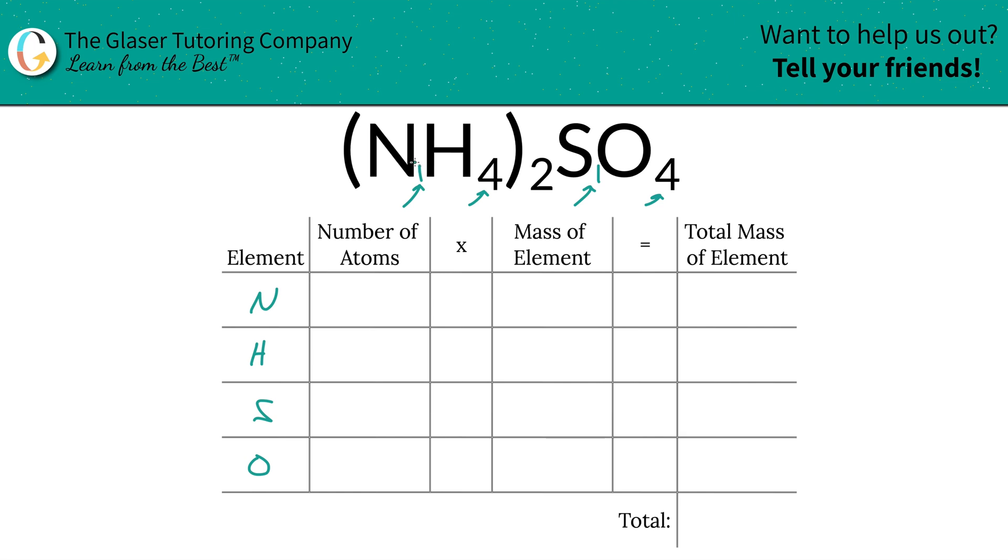To find the total, so you have two nitrogens. Similarly you would do the same thing for hydrogen - take the four, multiply it by the outer subscript of two, so you have eight hydrogens. You'll have only one sulfur because there is no outer subscript to multiply it by, and you have four oxygen.